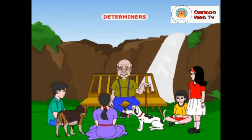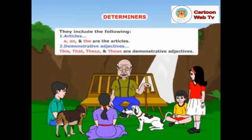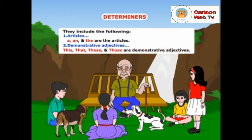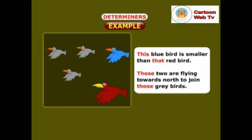Grandpa, what are determiners? Determiners are the words that determine or limit the nouns that follow. They include the following. Number 1: articles. A, an and the are articles, about which we will discuss later. Number 2: demonstrative adjectives. This, that, these and those are demonstrative adjectives. Look at this example: this blue bird is smaller than that red bird.